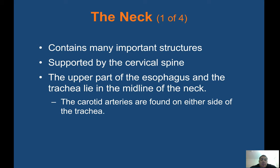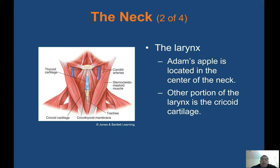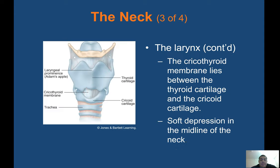The neck contains many important structures supported by the cervical spine. The upper part of the esophagus and the trachea lie in the midline of the neck. The carotid arteries are found on either side of the trachea. The larynx — Adam's apple — is located in the center of the neck. Another portion of the larynx is the cricoid cartilage. You have your carotid arteries, one on each side, then your cricoid cartilage, your cricothyroid membrane, and your trachea. For men it's a little easier to find because of the Adam's apple. You also have your sternocleidomastoid muscle and your thyroid cartilage.